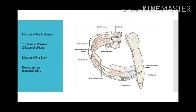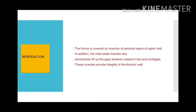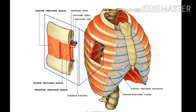Muscles of the abdomen such as external oblique and erector spinae also cover the thoracic wall. The thoracic cage forms the skeletal framework of the wall of the thorax. The gaps between the ribs are called intercostal spaces, and they are filled by the intercostal muscles and contain intercostal nerves, vessels, and lymphatics.